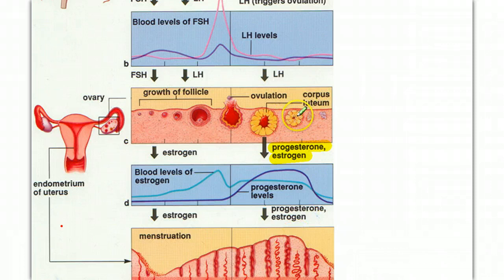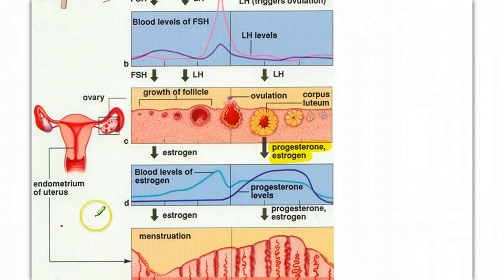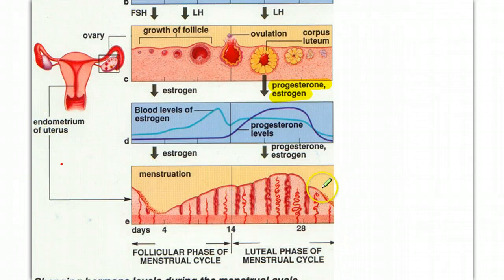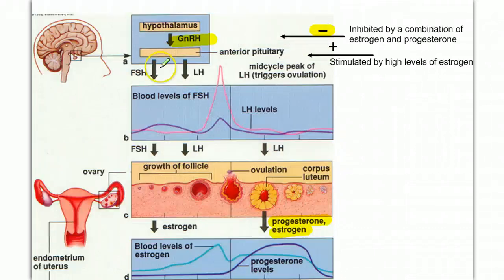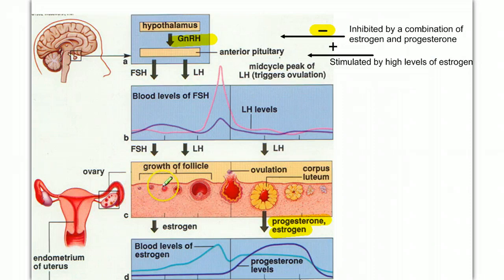Eventually, the corpus luteum begins to break down. As it does, levels of progesterone drop off drastically. This drop in estrogen and progesterone initiates a new uterine phase, as the endometrium wall begins to break down and we have menstruation, or the flow phase. As estrogen and progesterone levels drop, we get rid of this inhibition effect, and FSH and LH can start to rise once again, and we can start to mature a new follicle.